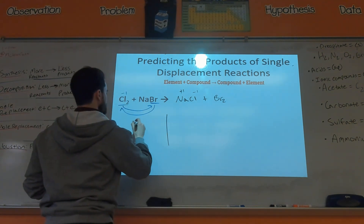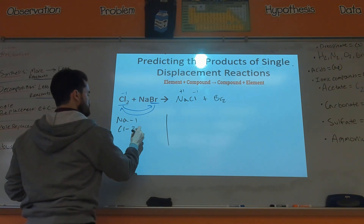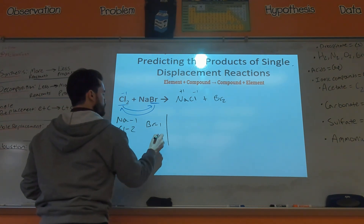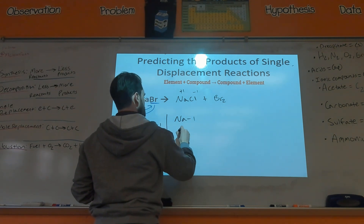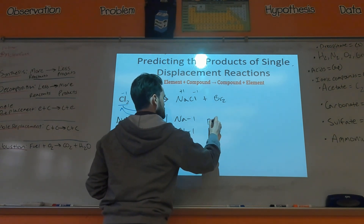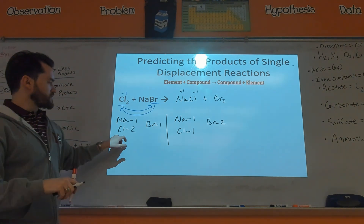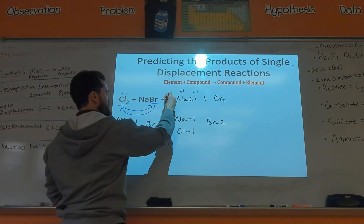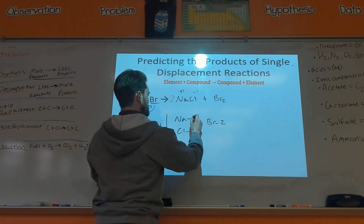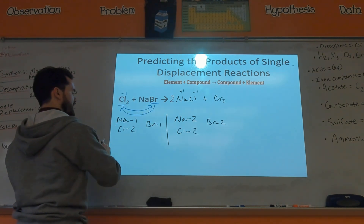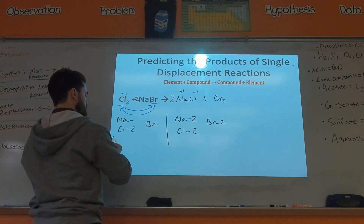Now let's balance Cl₂ + NaBr → NaCl + Br₂. Left side: one Na, two Cl's, one Br. Right side: one Na, one Cl, two Br's. Fix the chlorines by doubling the NaCl, then double the NaBr to fix the bromines and sodium. That should do it.